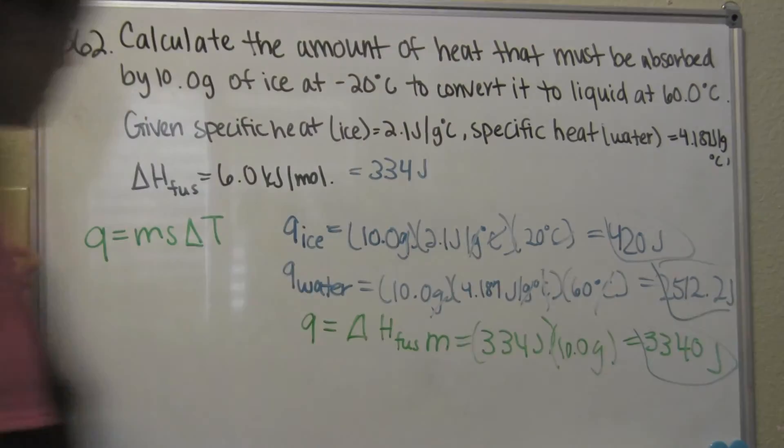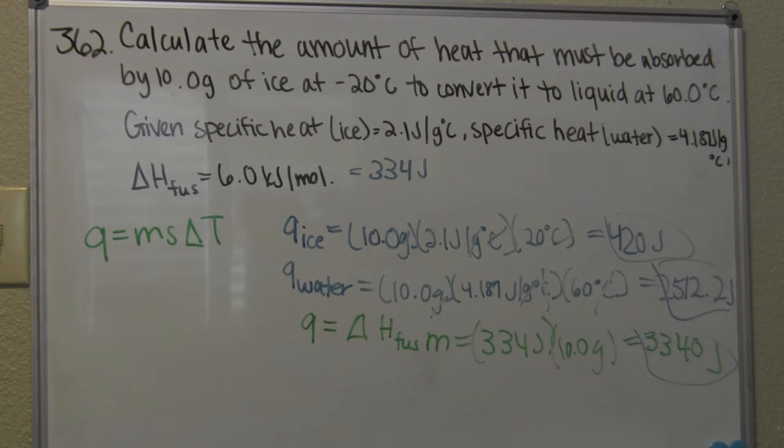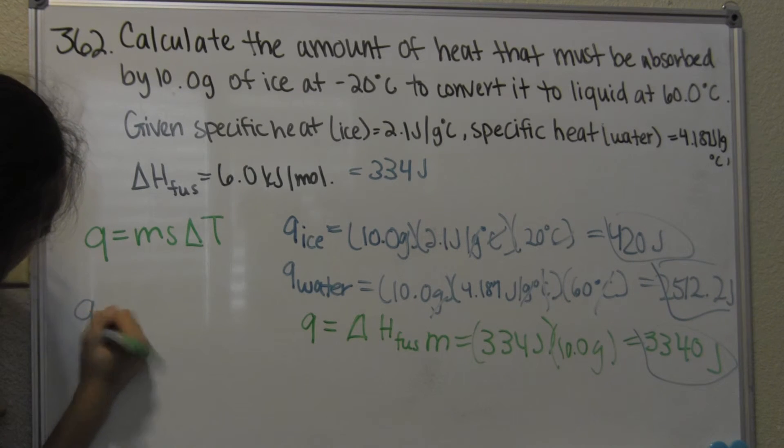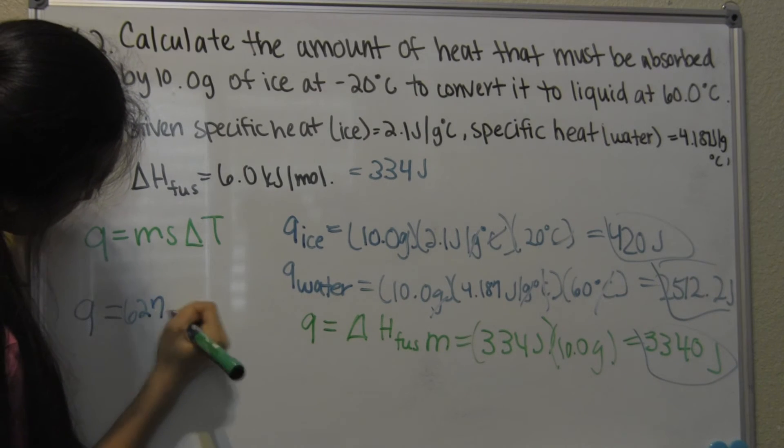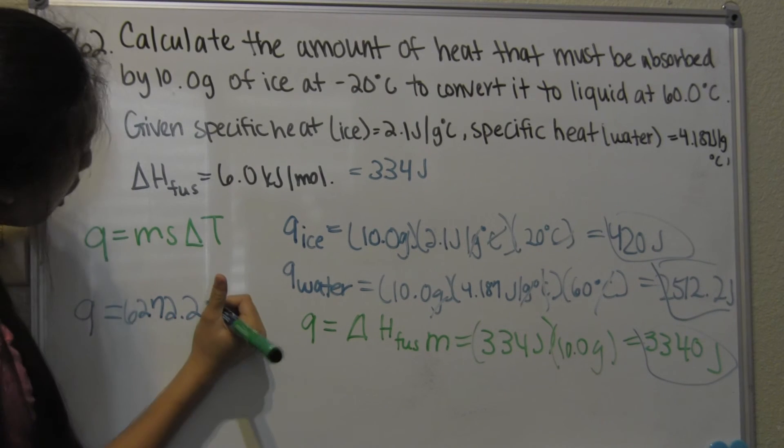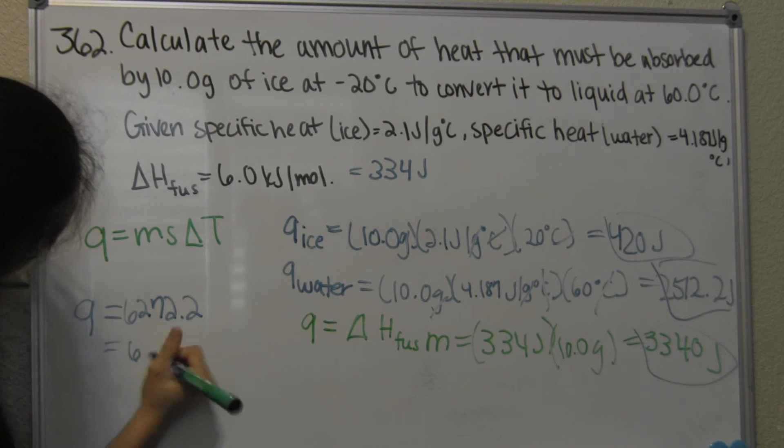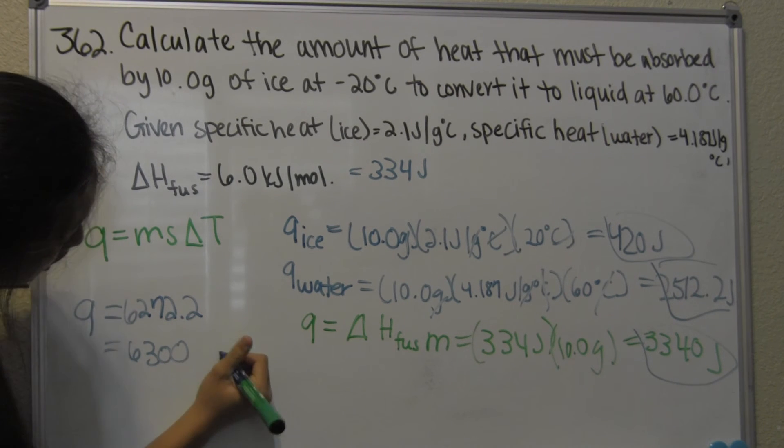Let's go ahead and do that right now. If you do that, you'll get Q, which is heat, is equal to 6,272.2, which rounds off to 6,300 joules.